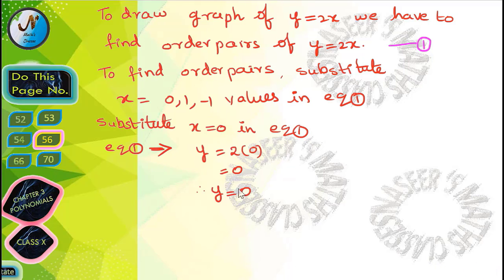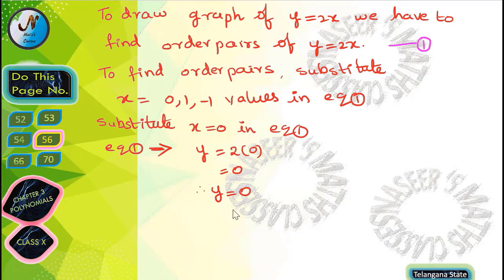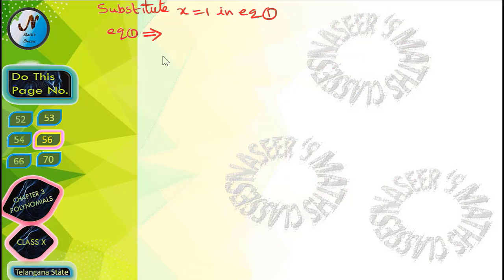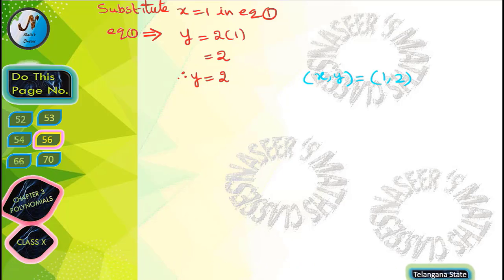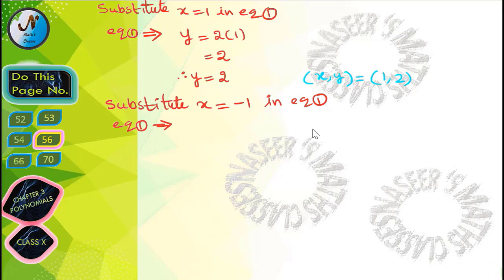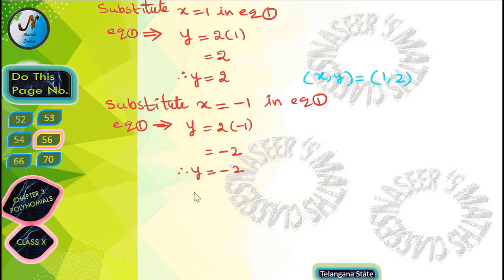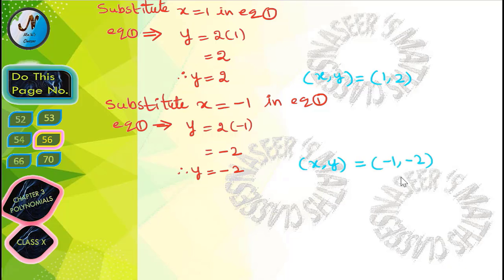Substitute x = 0: y = 2×0 = 0. Ordered pair: (0, 0). Substitute x = 1: y = 2×1 = 2. Ordered pair: (1, 2). Substitute x = -1: y = 2×(-1) = -2. Ordered pair: (-1, -2). To draw a graph of a linear equation we require at least two ordered pairs.